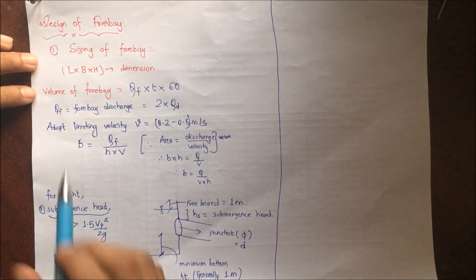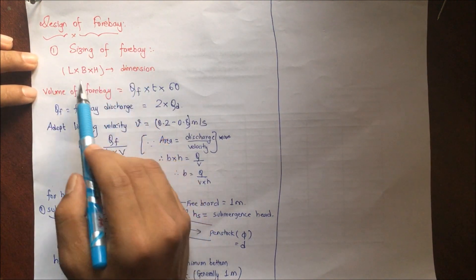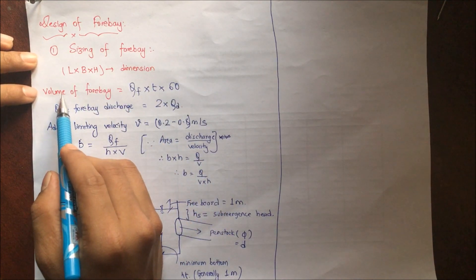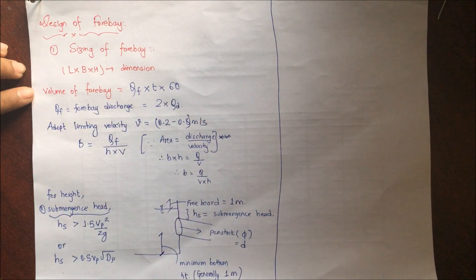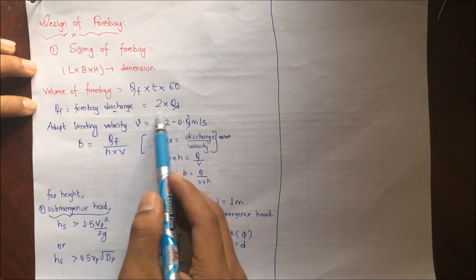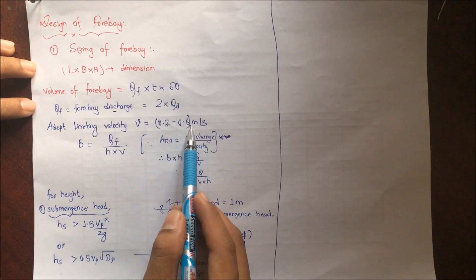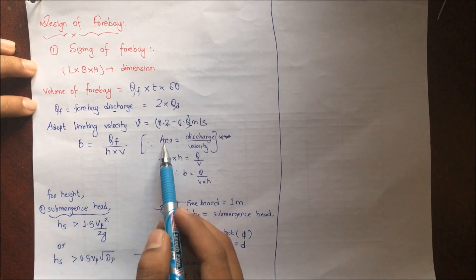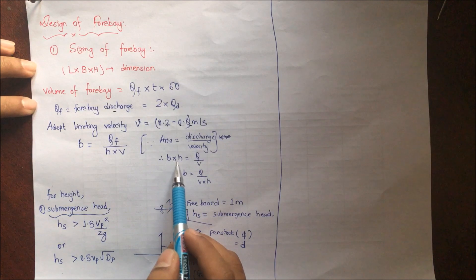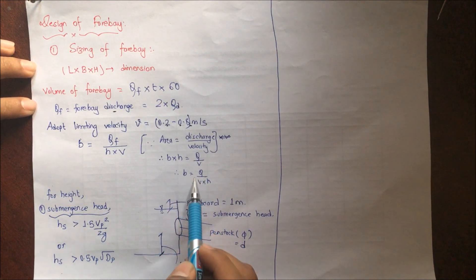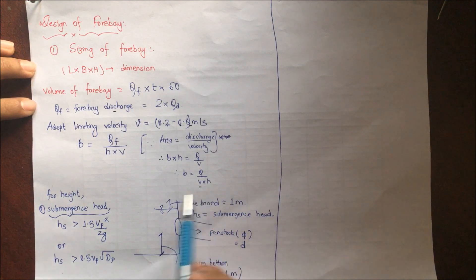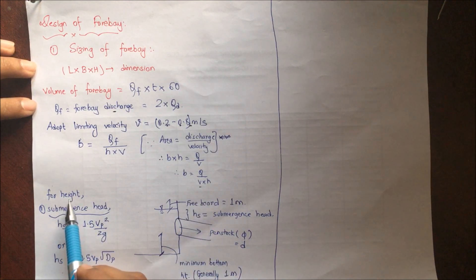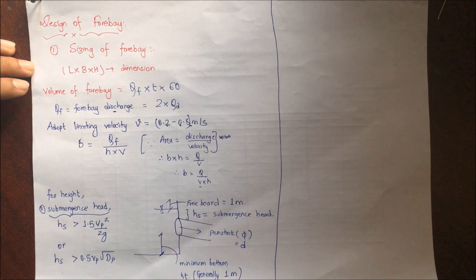Steps of designing: starting with the sizing of forbay L×B×H, these are the dimensions. Volume of forbay: Qf × t × 60, for which Qf is forbay discharge, that is 2 × Qd. For the velocity in the forbay, adopting limiting velocity V = 0.2 to 0.8 m/s, we have B = Qf/(H×V). We know that area = discharge/velocity, and area is B×H = Q/V, so finally we get B = Q/(V×H). You have to understand that we are using the limiting velocity for height.